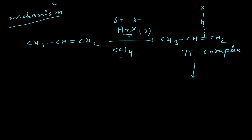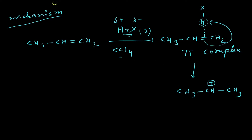This π complex will then form a sigma complex. The interaction in the π complex is very weak, so it converts into a σ complex. The double bond will dissociate and attack the hydrogen atom. If the double bond breaks one way, one carbocation will form; if it breaks the other way, a different carbocation will form.